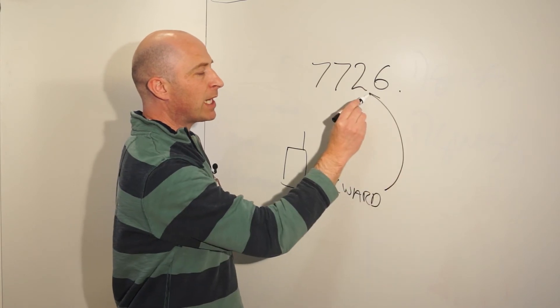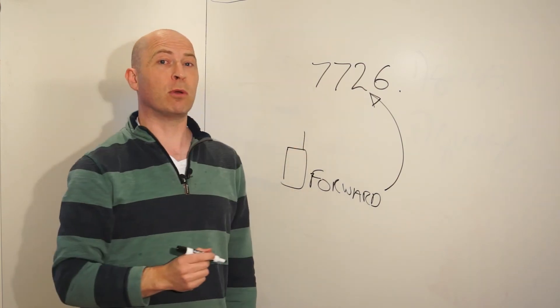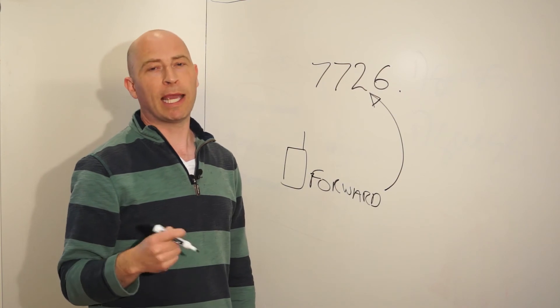And if you type in 7726 as the destination for that message, then that message will go to your mobile phone carrier. It doesn't matter which carrier you use, Sprint, T-Mobile, AT&T, etc.